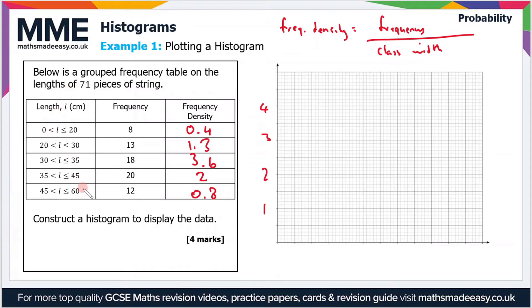Looking at the length column, the scale needs to go from zero to 60 or at least cover that far. I'm going to use one large square is 5, because it's five little squares across.